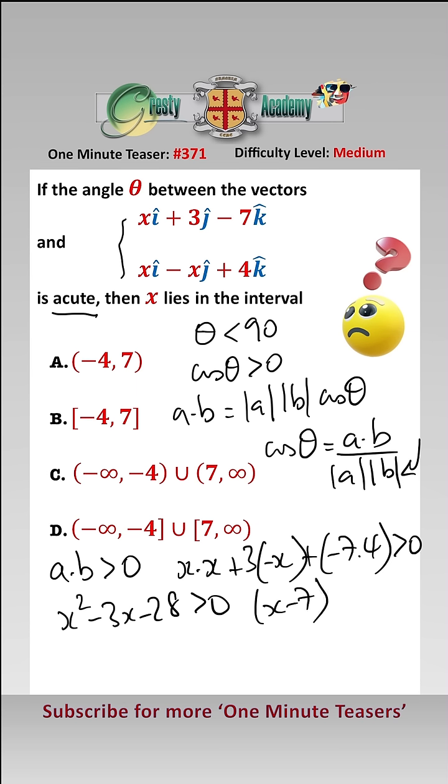i.e. x minus 7, x plus 4 must be greater than 0. Therefore, x must be greater than 7, or x must be less than minus 4, which in interval notation is answer C.